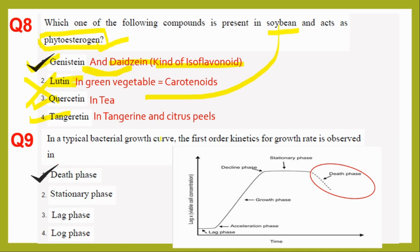Question nine: in a typical bacterial growth curve, the first order kinetics for growth rate is observed in which phase? There are four stages — lag phase, growth phase, stationary phase, and death phase. The lag phase is almost zero; the growth phase is exponential so it is not first order. The answer is the death phase, where first order kinetics applies.